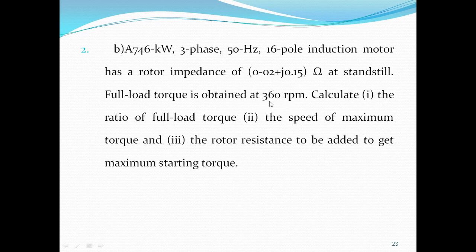Full load torque is obtained at 360 rpm. Calculate: (i) the ratio of full load torque to maximum torque, (ii) the speed at maximum torque.